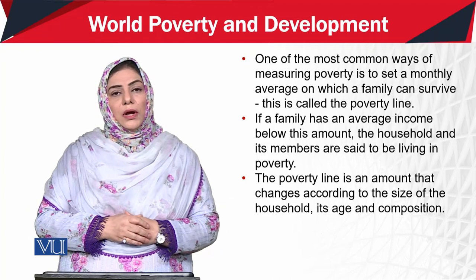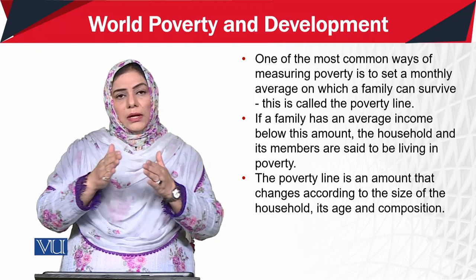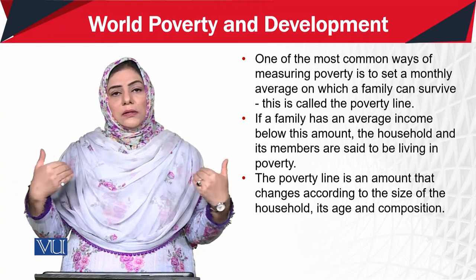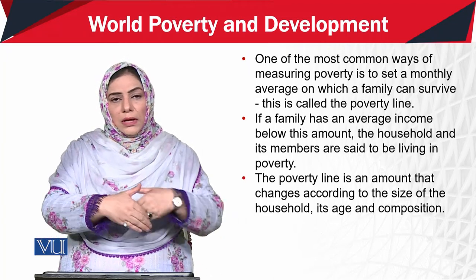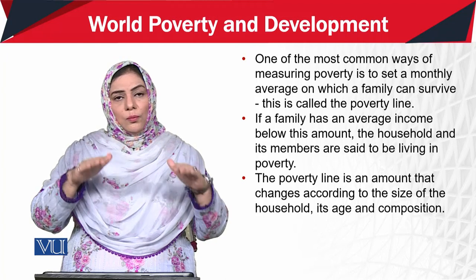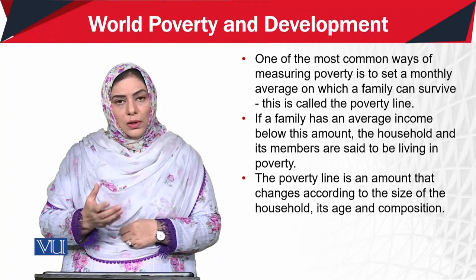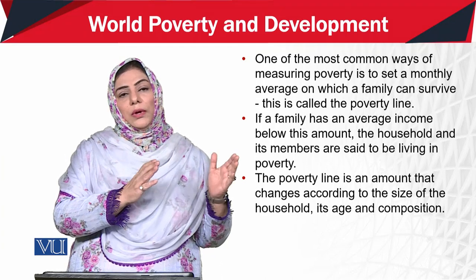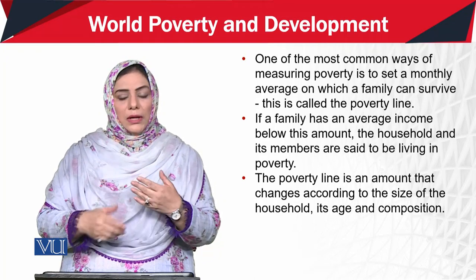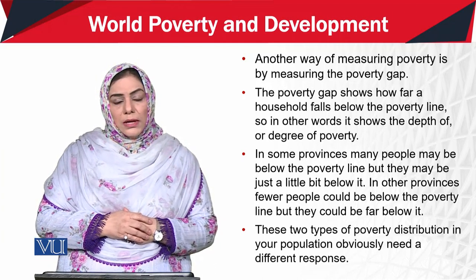The number of family members matters, along with how many are of older age, how many are children, how many are male and how many are female — because each person's food requirement differs. Some need education, some need more focus on health. This puzzle is very difficult to solve, because a certain formula cannot be applied to every family in every place. Age composition and gender both make it difficult to apply a single formula universally. So for measuring poverty, we need to look at what the poverty gap is.